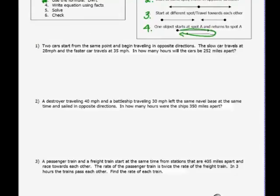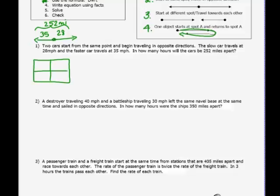I'm going to use a table like I said. This situation is two cars start from the same point and travel in opposite directions. This is my picture for number one. The slow car travels at 28 miles per hour and the faster car travels at 35. How many hours will the cars be 252 miles apart? I'm going to set up a table. In my table, I'm going to use rate times time equals distance. So car one travels at a rate of 28 miles per hour. Car two travels at a rate of 35 miles per hour.